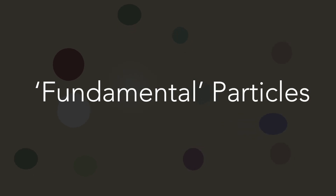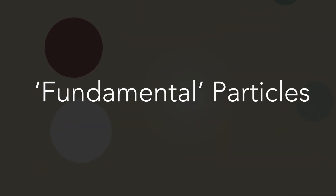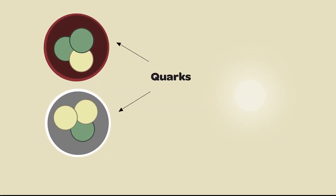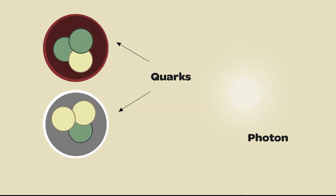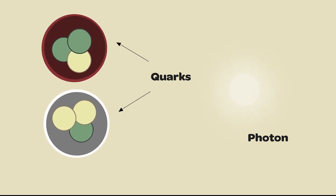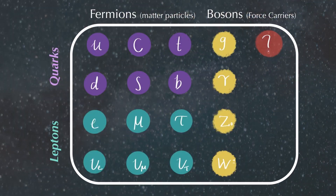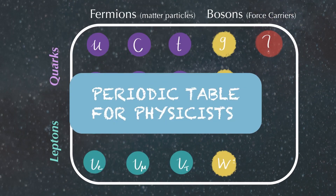Zooming into the quantum scale, everything is made up of fundamental particles. For example, protons and neutrons are made up of three particles called quarks, while light is made up of photons. These particles are the building blocks of all matter and can be represented by the standard model, a periodic table for physicists.